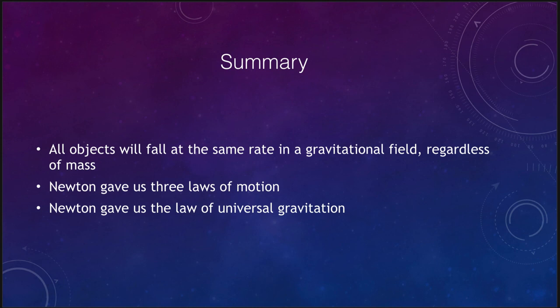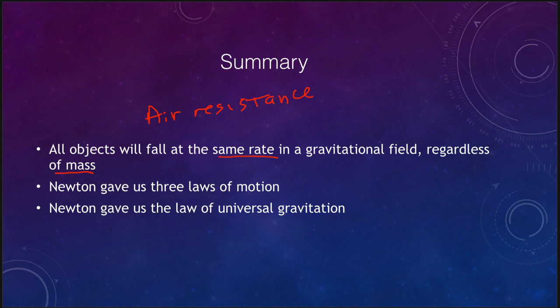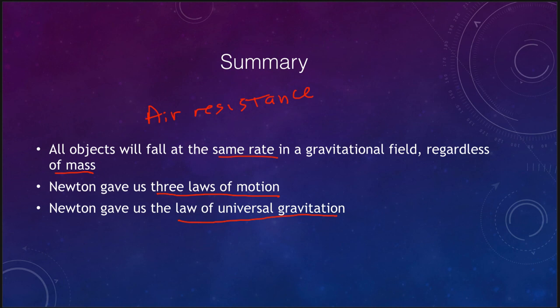To summarize: all objects fall at the same rate in a gravitational field — mass doesn't matter. On Earth, air resistance affects light objects like feathers, but not on the moon. Newton gave us the three laws of motion and the universal law of gravitation, which led to a modification of Kepler's third law allowing us to determine masses of objects in the universe. That concludes our summary of Newton and our understanding of gravity. See you next time — have a great day everyone.